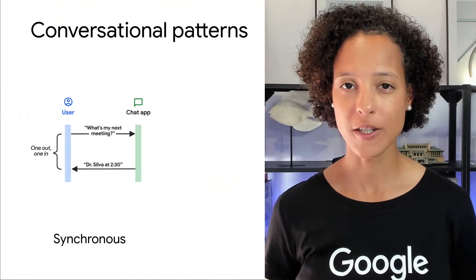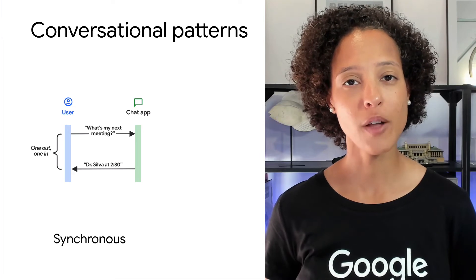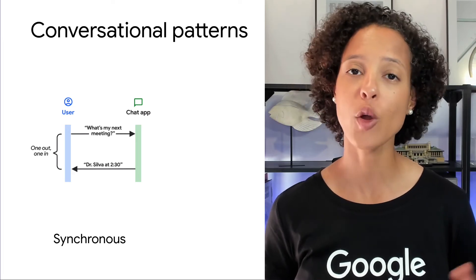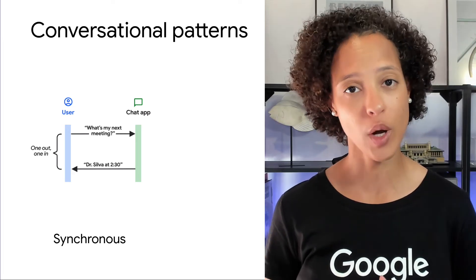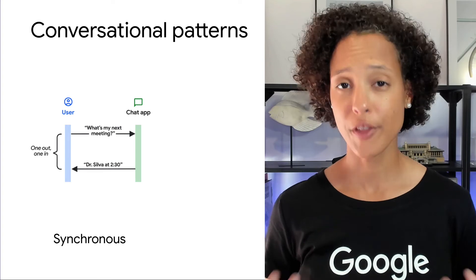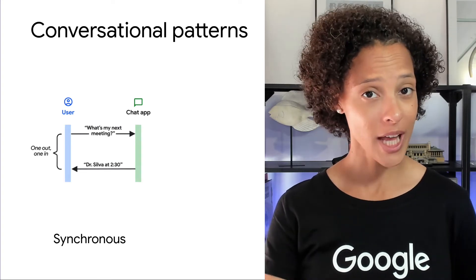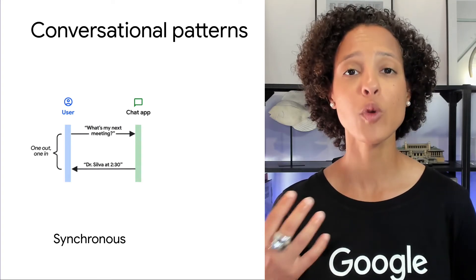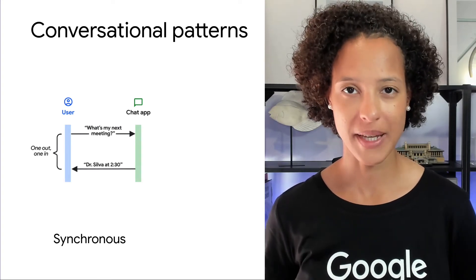You also want to think about how your chat app is going to interact with people. Here are three different conversational patterns that you might want to implement. With synchronous messaging, the chat app responds to messages from users on a one-to-one basis. If the user messages the chat app, it will respond with an appropriate message.